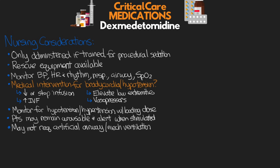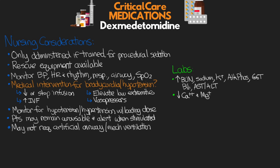For relevant laboratory studies, we may see an increase in BUN, sodium, potassium, ALK-phos, gamma-glutamyl transferase (GGT), bilirubin, or AST and ALT. It may decrease calcium and magnesium levels, may increase or decrease glucose levels, and may decrease red blood cell count.